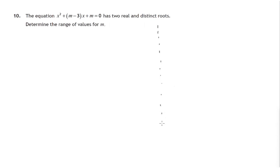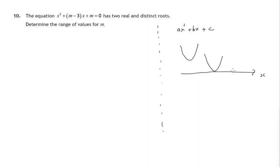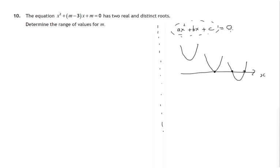Let's have a look at some of the ideas behind solving this question. If I have a quadratic expression, we have a quadratic graph — a parabola — that shows us the values that expression can take. When we ask when it equals zero, we could have no solutions, one solution, or in this case two distinct solutions. That's the case here: two real and distinct roots, where the graph crosses the x-axis.